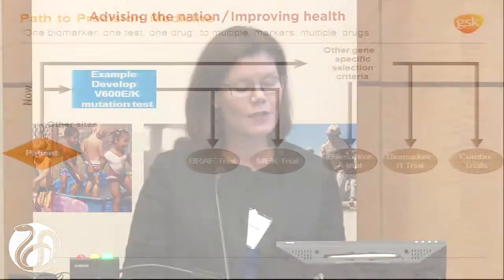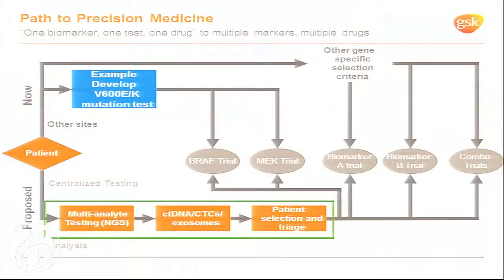We know this path to precision medicine because this has been how we've been practicing precision medicine over the course of the last ten or so years. However, it is going to be increasingly important to have more comprehensive data on patient samples such that there is better identification of patients for different studies and different clinical trials — whether they be umbrella or basket studies — as well as ultimately for treatment decisions in clinical practice.